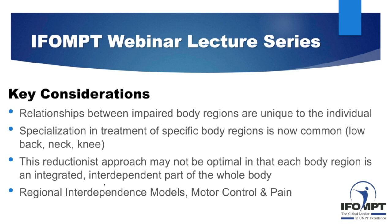This leads me to the final consideration. There are two things we need to consider before we get into the thorax and the pelvis. The first is the regional interdependence model — where did it come from, what's it about, and why is it starting to gain traction in our industry. The second is the topic of motor control and pain, because both have a lot of relevance with respect to why we need to take a step back, not just look at the area of symptoms or the area of lack of function, and direct all our treatment to that area.